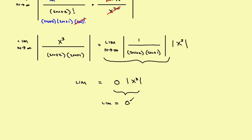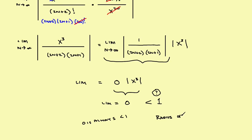By the ratio test, we want to know: for what values of x is this limit less than 1? No matter what you pick for x, multiplying by 0 gives 0, and 0 is always less than 1. So you can pick any x you want. This means the radius of convergence is equal to infinity, and the interval of convergence goes from negative infinity to positive infinity — and you're done.